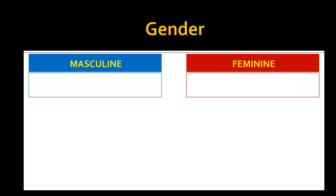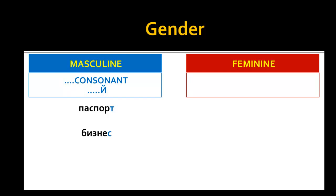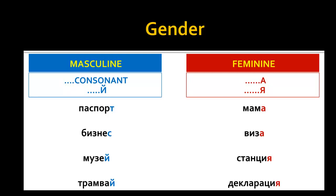In most cases you can recognize the gender of a word by looking at its ending. If a word ends in a consonant or in и краткое, it's masculine. For example, the words Паспорт and Бизнес end in consonants Т and С, and Музей and Трамвай end in и краткое — so all these words are masculine. A word is feminine if it ends in А or Я. For example, Мама and Виза end in А, and Станция and Декларация end in Я — so they are all feminine.